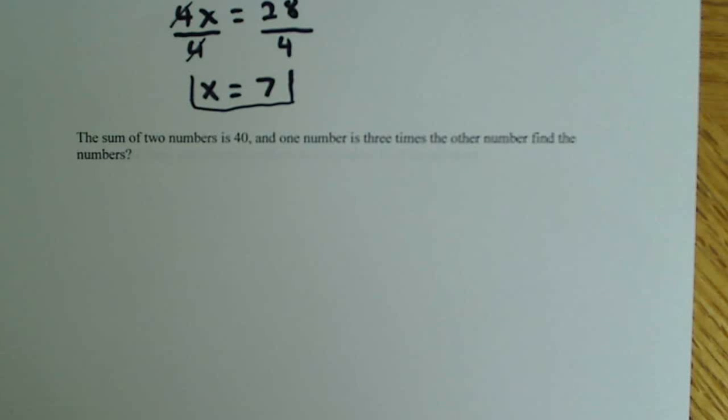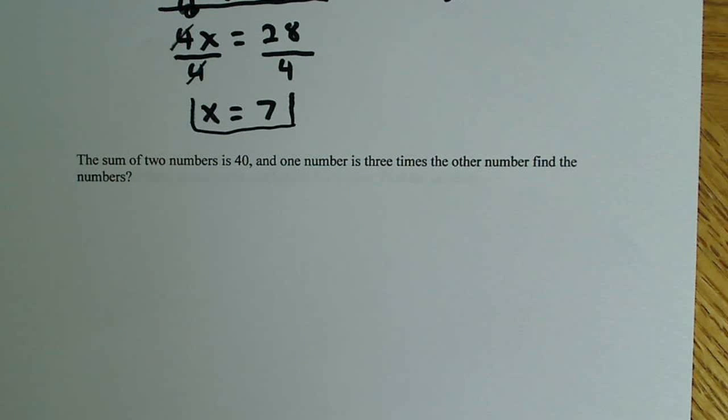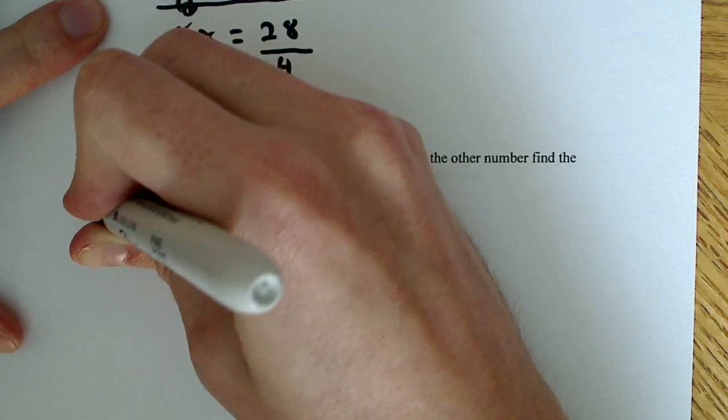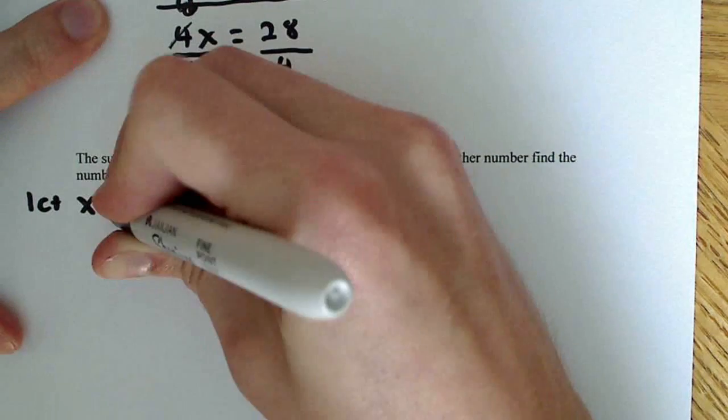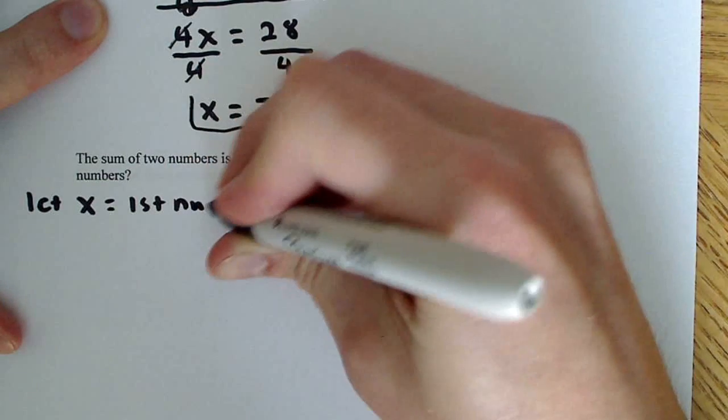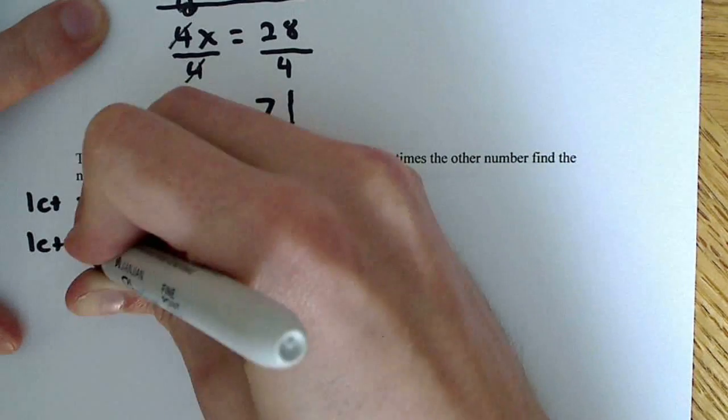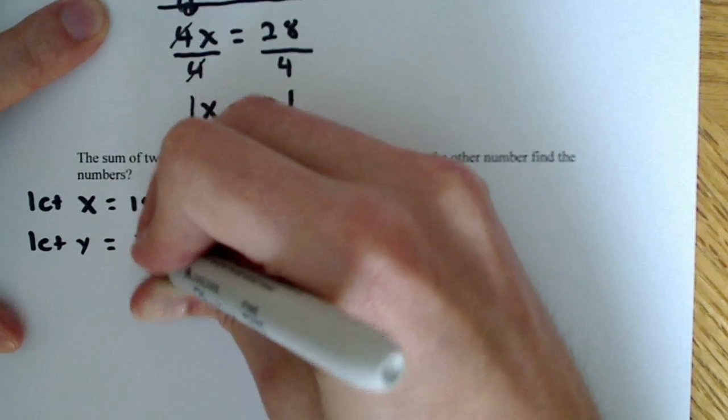The first thing you notice in this problem is that the sum of two numbers is 40, so we know we're going to have two variables. So I'm going to define those variables first. I'm going to say let x equal the first number, and I'm going to say let y equal the second number.